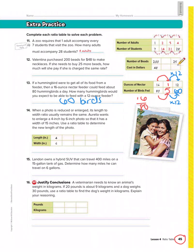Number 14. When a photo is reduced or enlarged, its length to width ratio usually remains the same. Aurelia wants to enlarge a 4 by 6 inch photo so that it has a width of 15 inches. Use a ratio table to determine the length of the photo. So we want a width of 15 inches. So if you look at the table, the bottom is width. So I'm going to put 15 in the bottom row because 15 is a width.